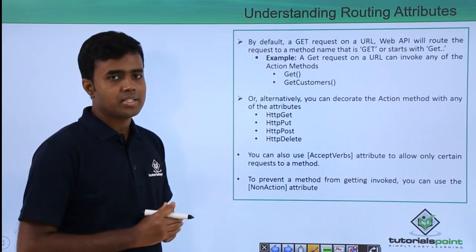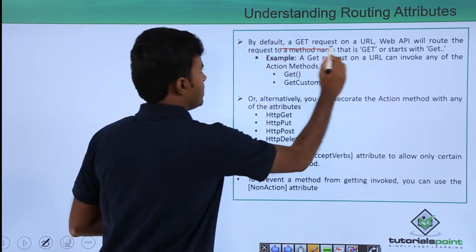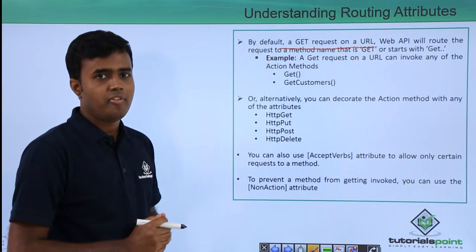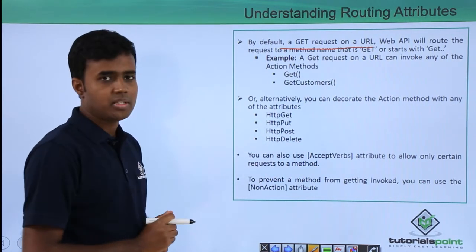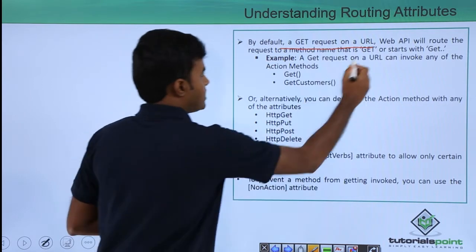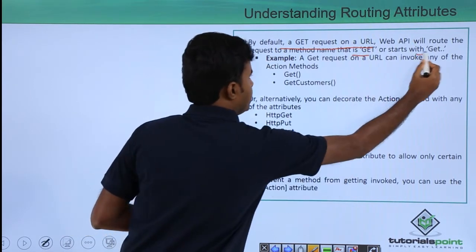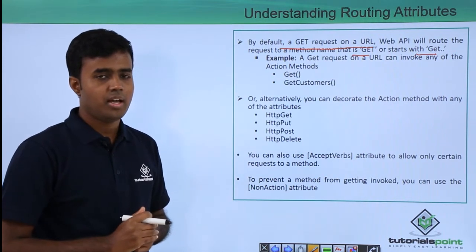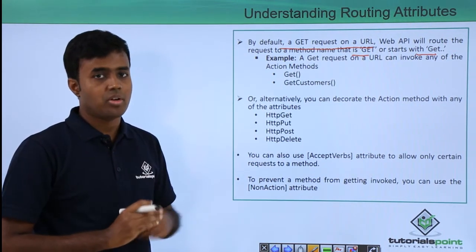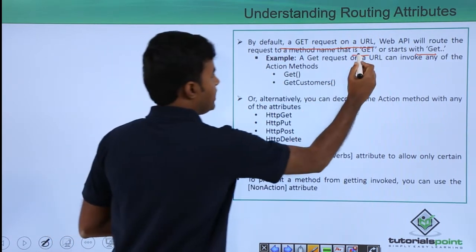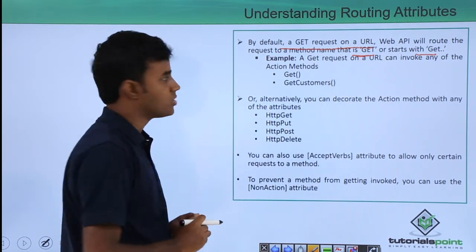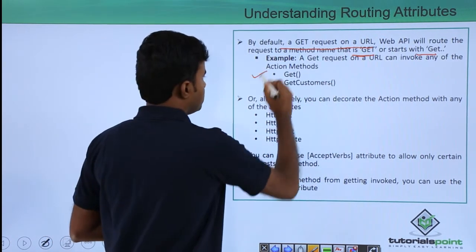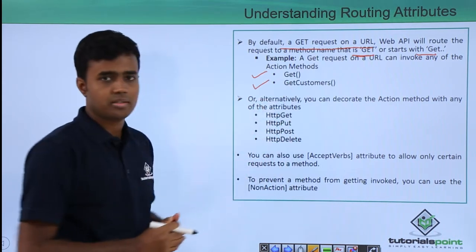The way Web API works is that whenever a GET request is sent on a URL, Web API will route the request to a method that is GET or starts with GET. Whenever I send a GET request to a URL, any of the methods or any of the first methods that match the GET will get executed. It can map to either GET or GET customers or GET products, anything. Whichever first method matches, it will be picked up.